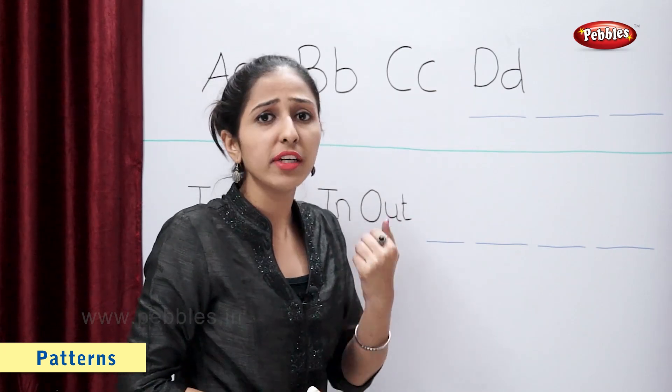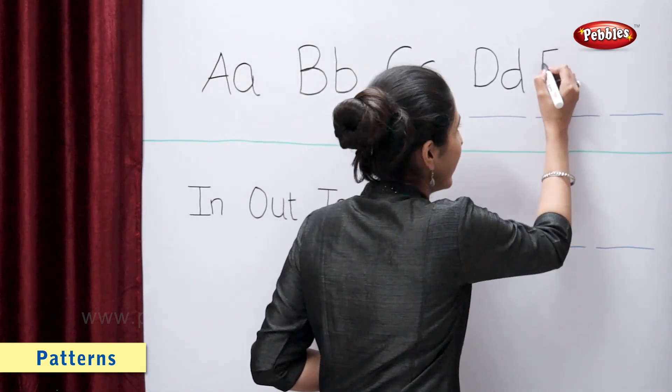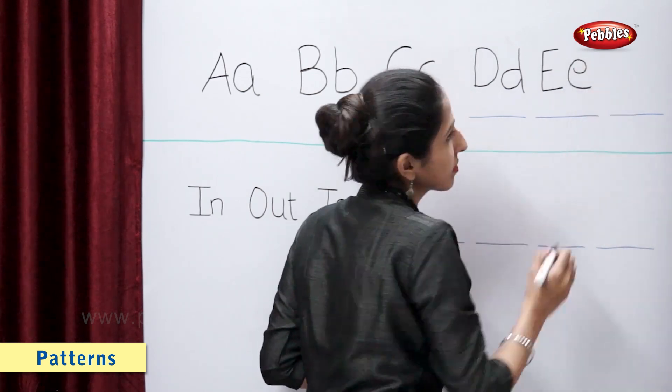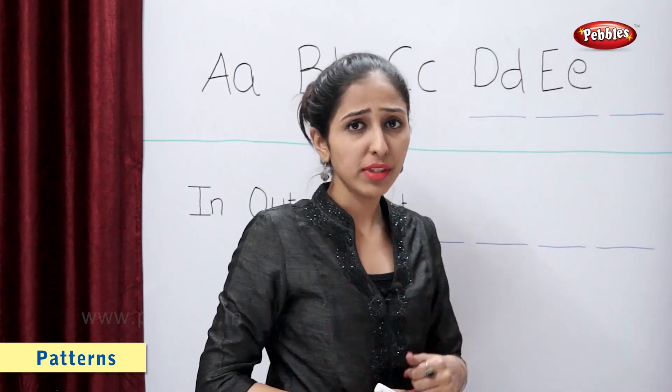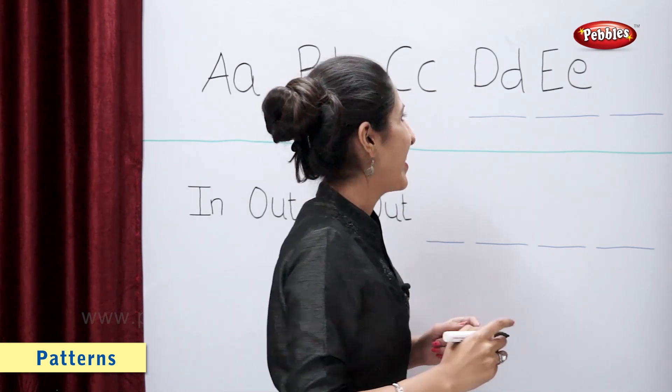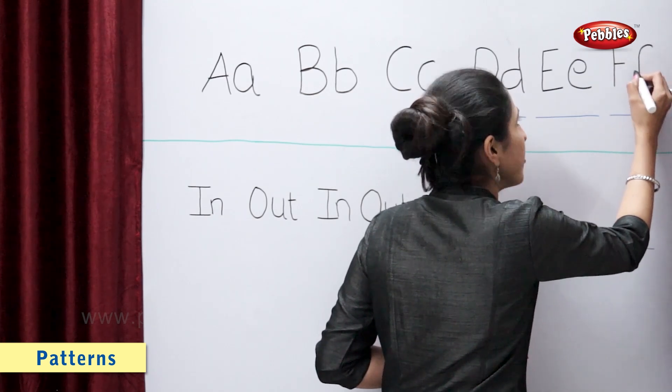What is after D? Correct. Capital E, small e. Which letter comes after letter E? Correct. Capital F, small f.